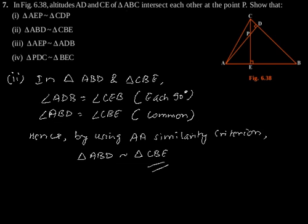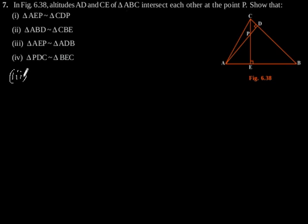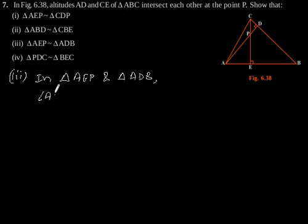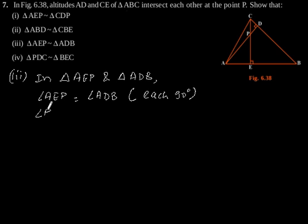Now the third part: show that triangle AEP is similar to triangle ADB. In triangle AEP and triangle ADB, angle AEP is equal to angle ADB, both are 90 degrees. And angle PAE is equal to angle DAB, both are common angles.